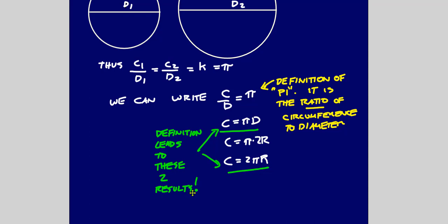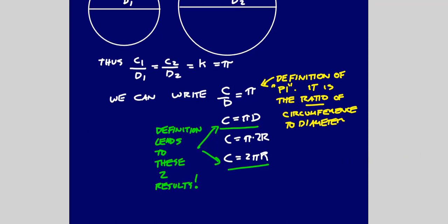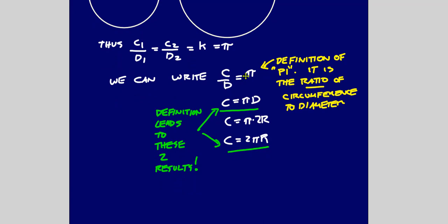You can do intricate calculus proofs where you integrate arc length to get the circumference of a circle, but in that proof you'll have to use arc sine or arc cosine — and those things rely on the value of pi. So that's circular reasoning: you're using pi to get pi. These formulas simply follow strictly from the definition of pi as the ratio of circumference to diameter.